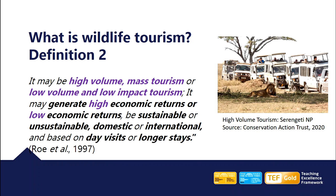So here we have a second definition, and this focuses on the scale and impact of wildlife tourism. The definition here by Rowe suggests that wildlife tourism can be high-volume mass tourism or low-volume, low-impact tourism. It can generate high economic returns or low economic returns. It can be sustainable or not sustainable, domestic or international, and based on day visits — for example, a day trip to Nantyrarian to see the red kites — or longer stays, for example specific visits to Africa to see safari animals. We can see in the picture a case of high-volume mass tourism in the Serengeti National Park in Africa. This high-volume tourism may bring in a lot of money to the destination — but what do you think the experience is like for the tourists, and what about the experience for the animals? What implications does this type of tourism have for their welfare?